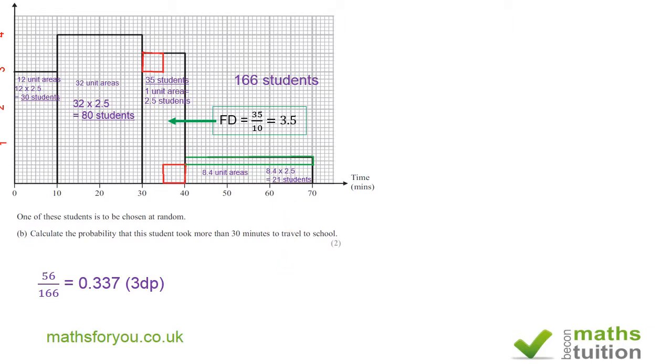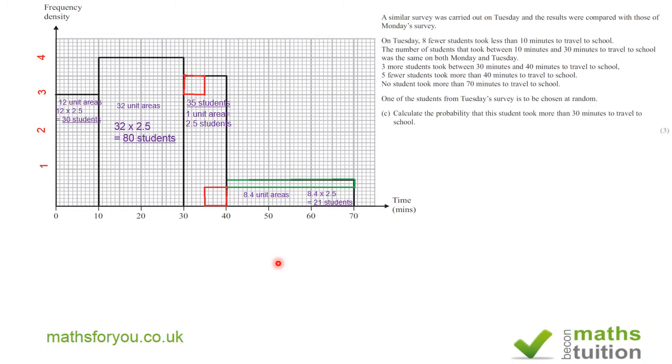Now moving on to the third or final section. On Tuesday for this time interval zero to ten, eight fewer students took less than ten minutes to travel to school, so in effect on Tuesday 32 students travel to school between 0 and 10 minutes. On Tuesday there's no change in number of students who travel to school between 10 and 30 minutes.